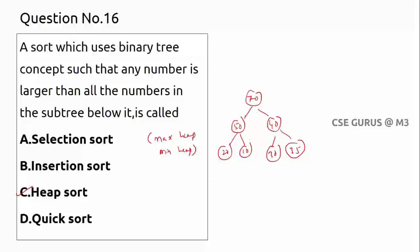In a min heap, it's the reverse — for the root, all descendants will be greater. Now, for sorting: we take this arrangement into an array. First, place the root 70 at index 0, then assign indices 0, 1, 2, 3, 4, 5, 6 for all 7 elements.